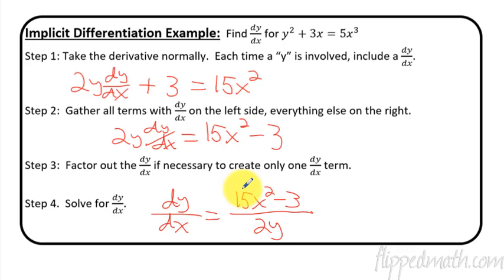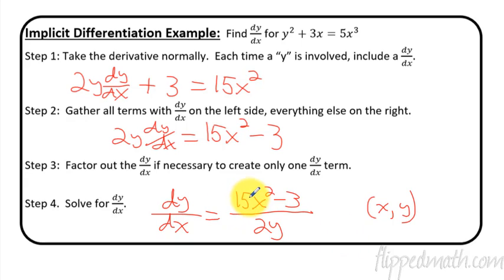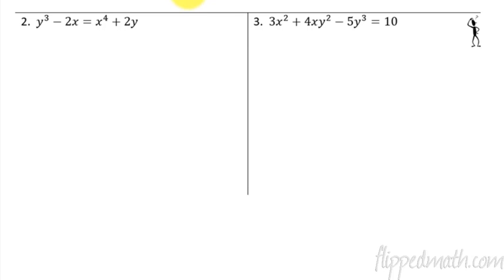How do we get the slope of the tangent line? In this example, the differential equation — which is what this is called — the derivative, you would need an x and a y value to be able to plug into this. So you need an entire coordinate point, not just the x value, to know the slope of the tangent line. Let's do another example, and this time I'll have that step 3 in there where we're going to factor something out.